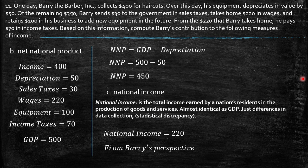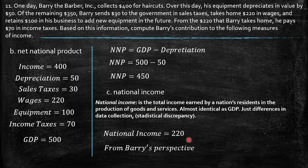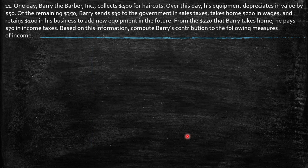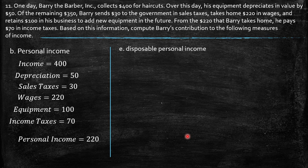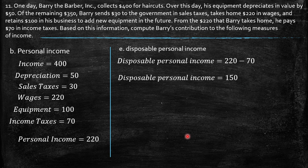We need to know the income for all people who paid for haircuts, but based only on the information provided in the exercise, national income should be Barry's income. Then personal income is $220. Personal disposable income should be $220 minus $70 in income taxes, so from Barry's perspective his contribution is $150.